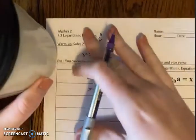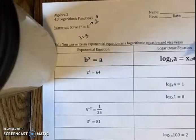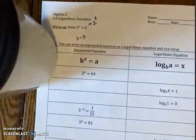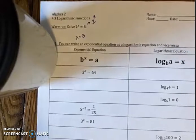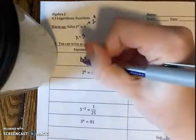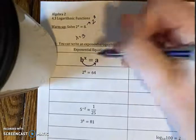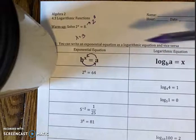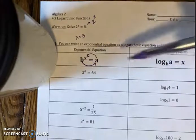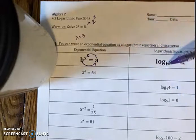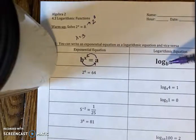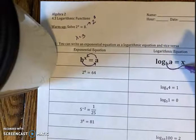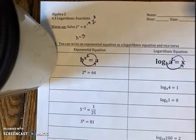We can write exponential functions or equations as logarithmic equations and vice versa. There's different ways that teachers can teach this. I do what I call the circle trick. It just tells me the order to write it. So let's say I start with an exponential equation. I start at my base, draw an arrow to the solution, and start at the solution drawing an arrow to the exponent. So this tells me what order I'm going to write it in the logarithm. It's log base b of a equals x. B came first, then a, then x.